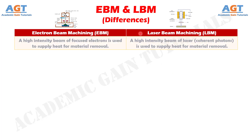Difference number 1: In electron beam machining, a high intensity beam of focused electrons is used to supply heat for material removal, whereas in laser beam machining, a high intensity beam of laser coherent photons is used to supply heat for material removal.